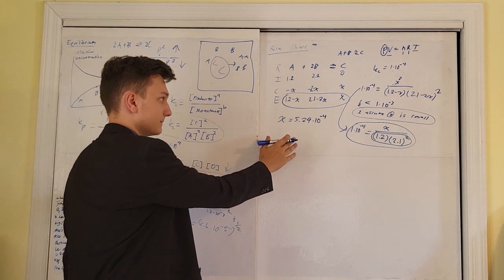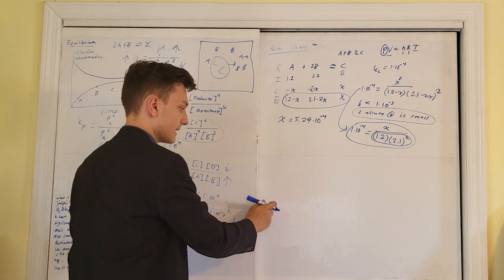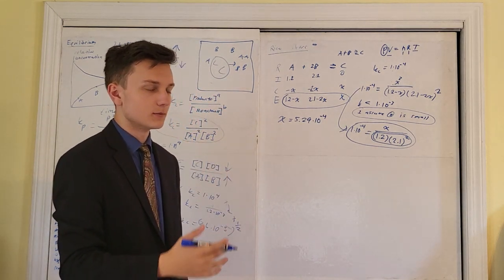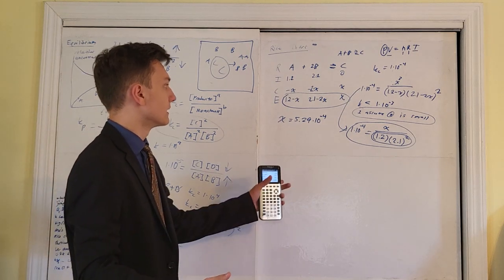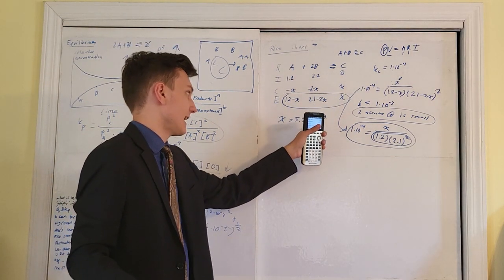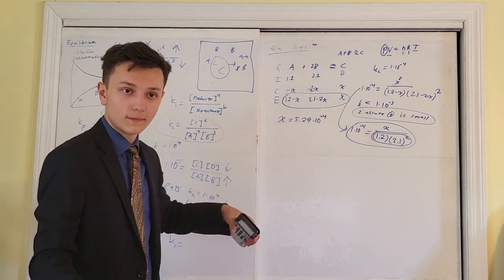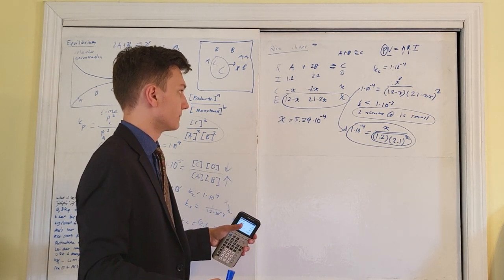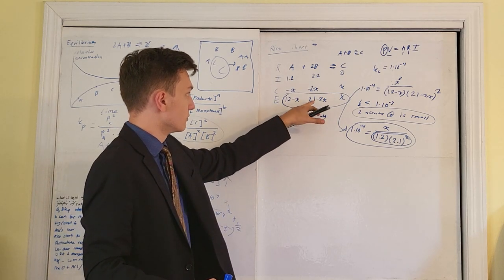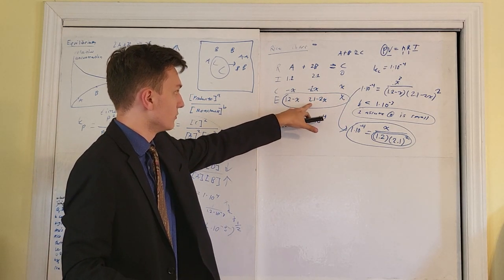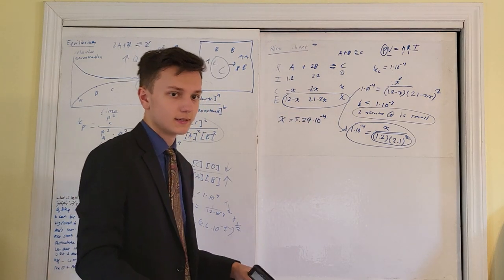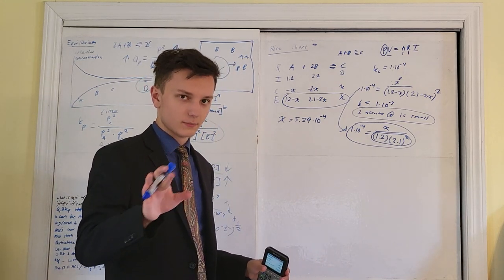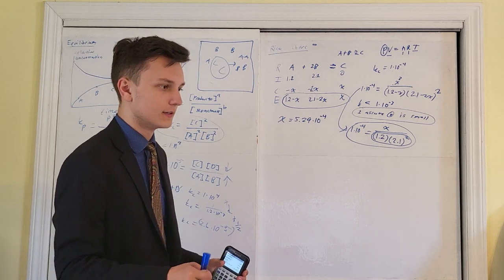But you're not done. The question might ask for the concentration of C at equilibrium — that's just x. Or it might ask for the concentration of B at equilibrium, in which case you compute 2.1 minus 2x and write that value in proper units. Stay reasonable within your significant figures.